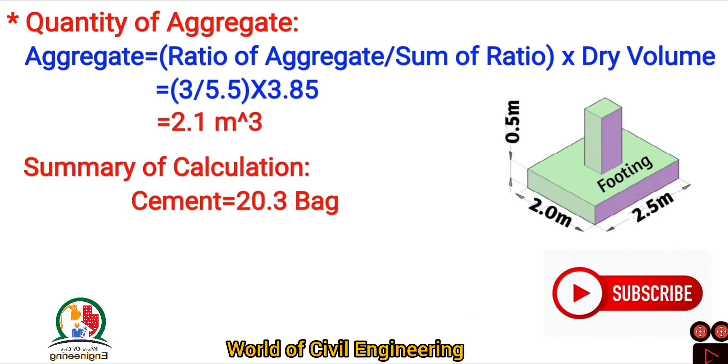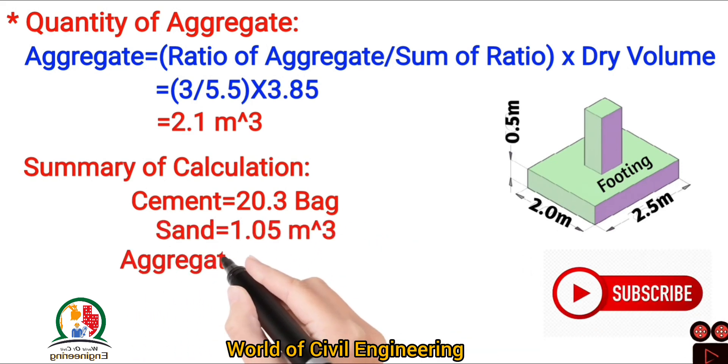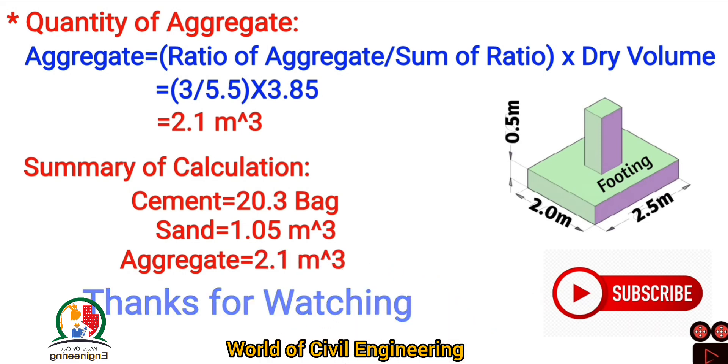Now the summary of calculation: cement needed 20.3 bag, sand needed 1.05 meter cube, aggregate 2.1 meter cube. Thanks for watching my channel.